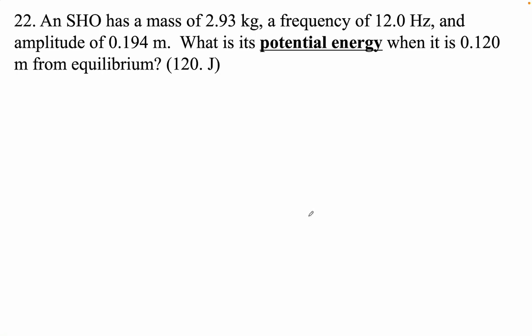An SHO, a simple harmonic oscillator, has a mass (this is our m), a frequency (remember period is one over frequency) of 12 Hz, and an amplitude (that's our x naught). What is its potential energy when x equals 0.12? Let's see, I think we need our omega.